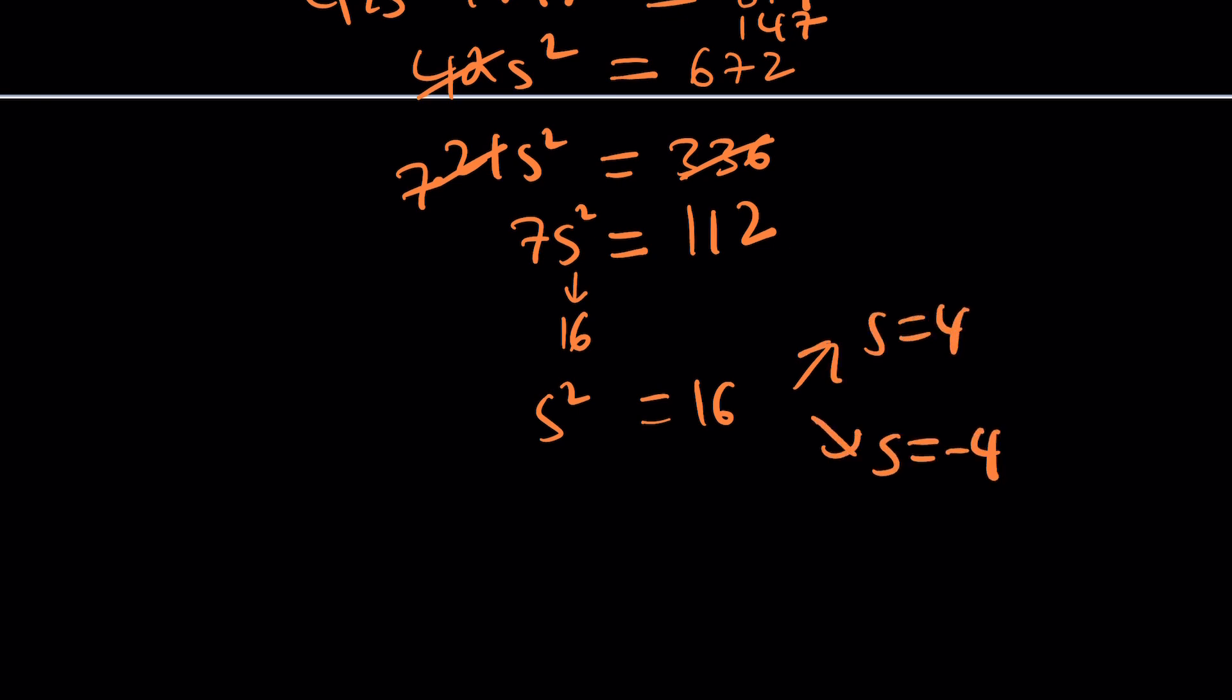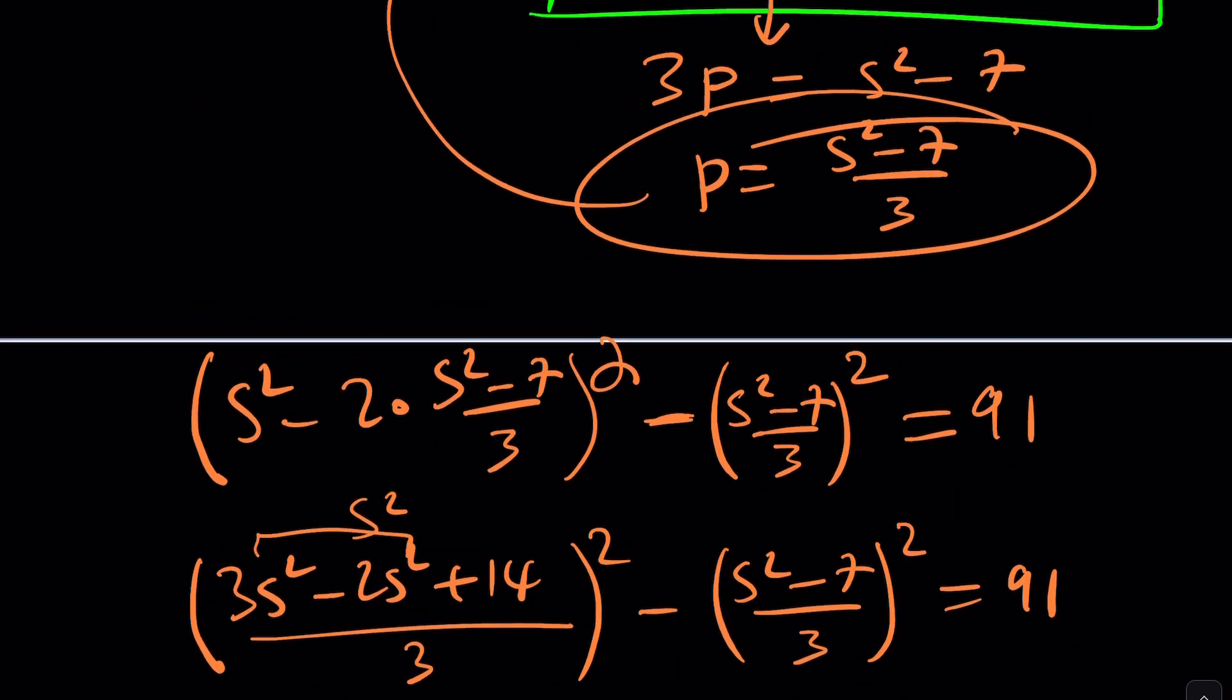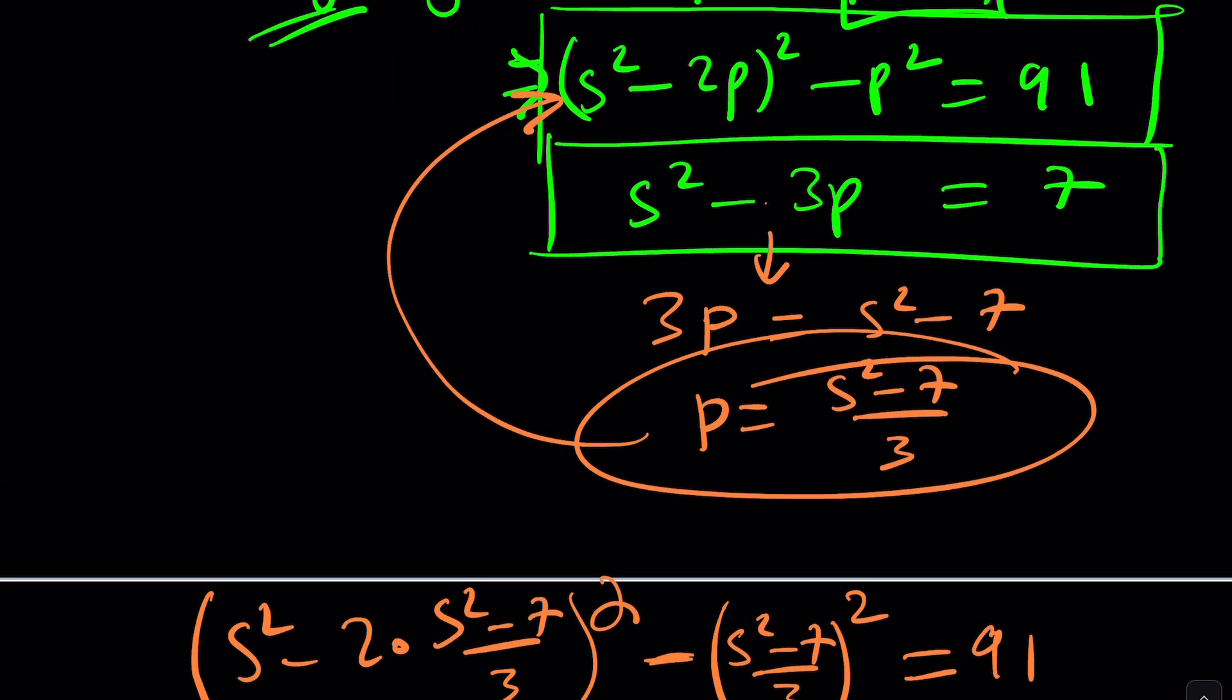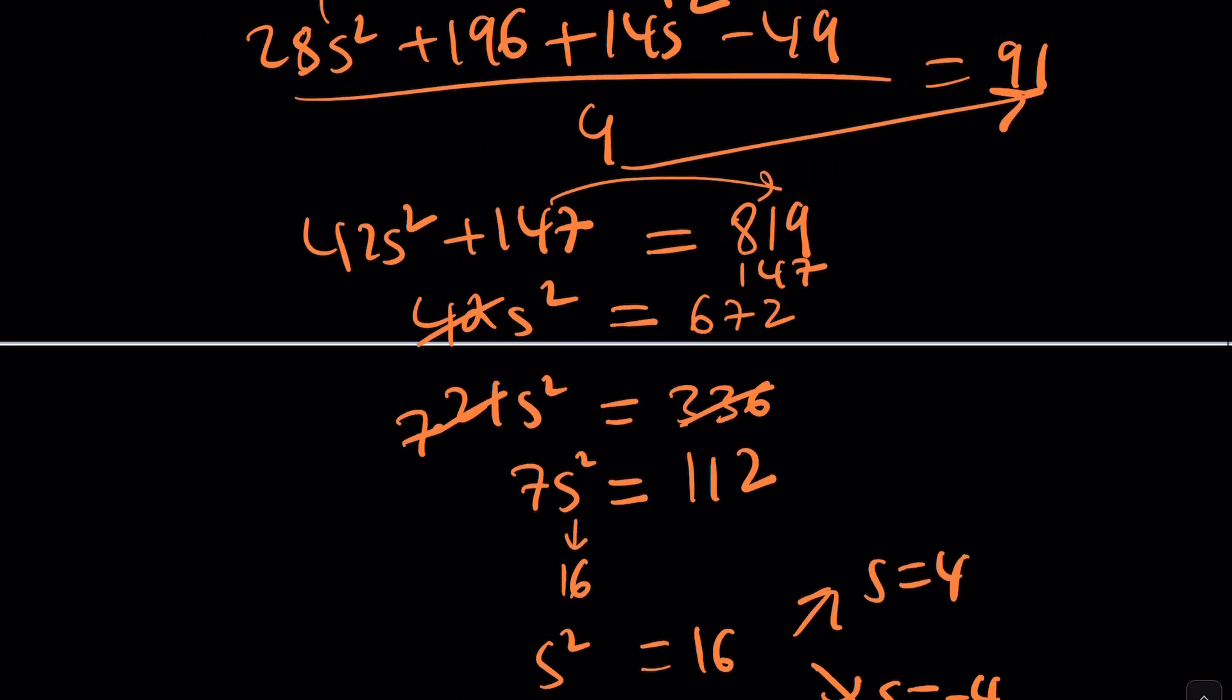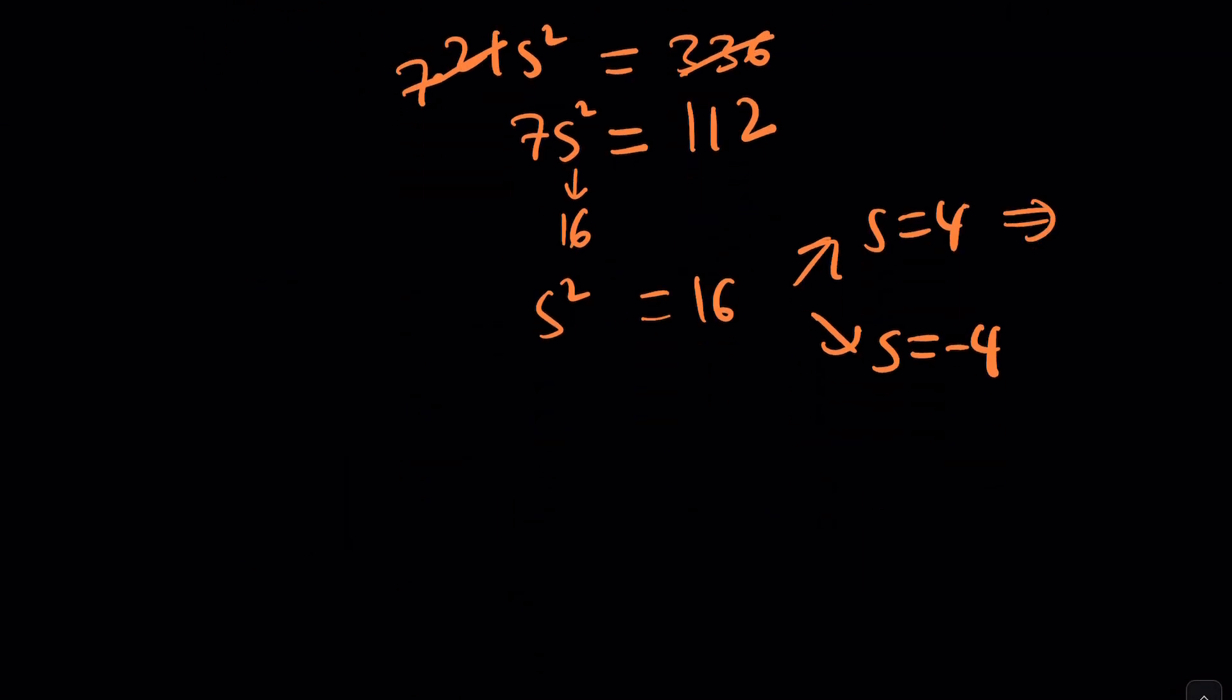So from here, you can proceed. How? If S is 4, we can find P. If S is 4, 16 minus... By the way, right? No matter what S is, S squared is always 16. So you can just go off of that. 16 minus 7 is... What is 16 minus 7? 9. Okay. 9 divided by 3 is 3. So this gives us P equals 3. Both cases, right? That's the product.